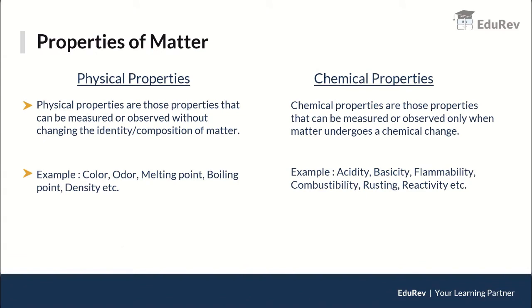Every substance has its own unique properties, and these properties can be classified as physical properties or chemical properties. Physical properties are those that can be measured or observed without changing the identity or composition of matter. Chemical properties are those that can be measured or observed only when matter undergoes a chemical change.